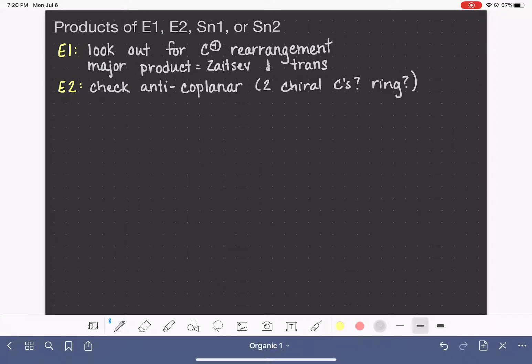For the E2 reaction, the major product depends on the type of base that we are using. So if we have the bulky base, which is tert-butoxide, O-C-(CH3)3, the major product in that case will be our Hofmann product, which is our least substituted alkene.